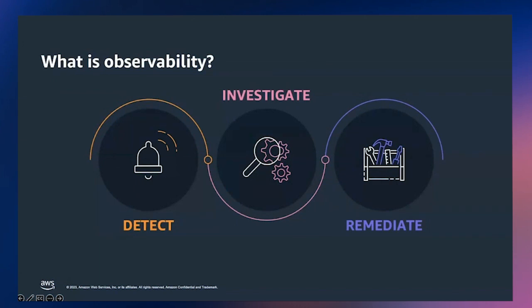Customers often don't detect issues as soon as they begin — there is often a lag from when an issue starts and when you are notified. This is a day in the life for many SRE engineers. You want to reduce this lag as much as possible. Detection should be proactive and multifaceted. Anomaly detection is a key tool in the toolbox, as well as the ability to link related alarms together to reduce alarm fatigue. You can respond to failures quicker if you alert near the source of the telemetry: logs, metrics, and traces.